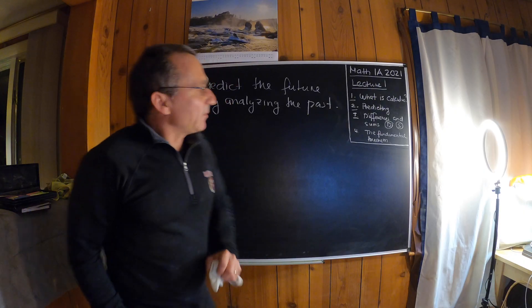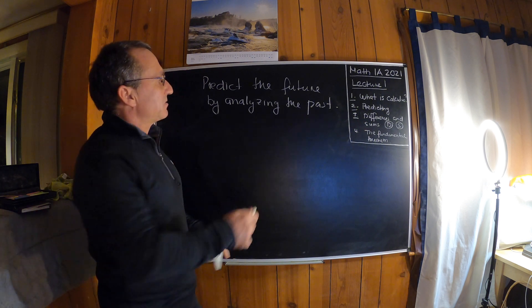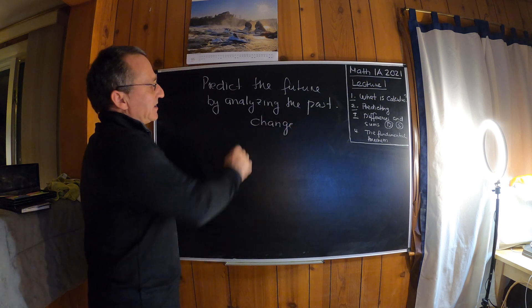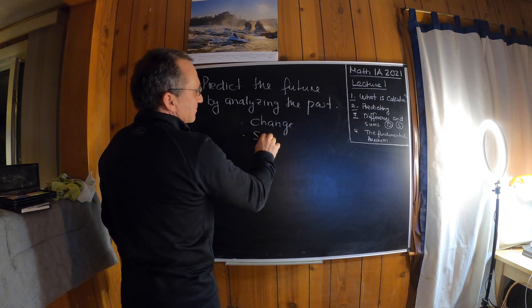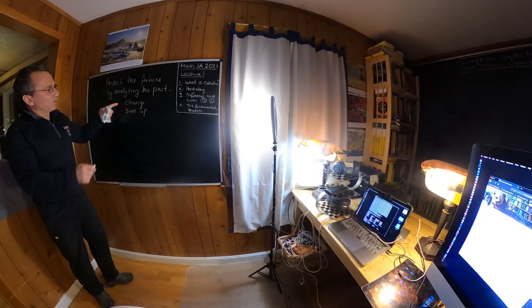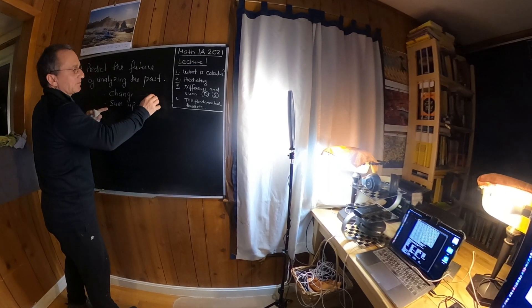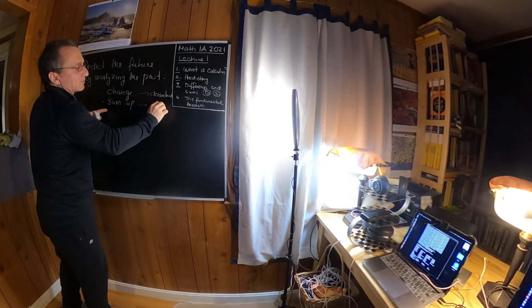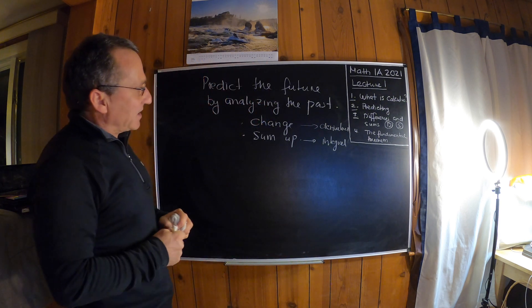When we analyze the past, we want to see how things have changed — so we look at change. And when we want to make a prediction, we sum up. These two things are essential in calculus: looking at change produces the derivative, and summing up produces the integral, and these two things are linked together in a nice way.